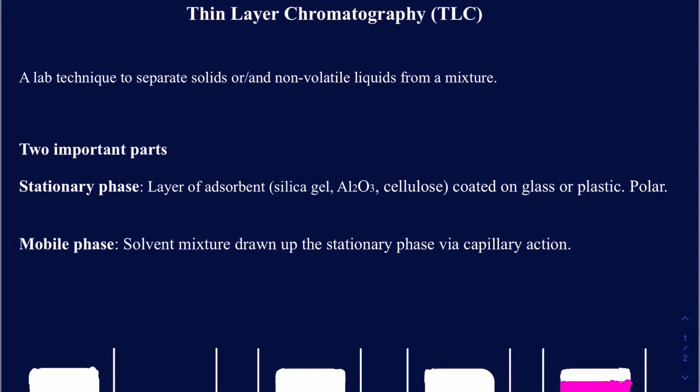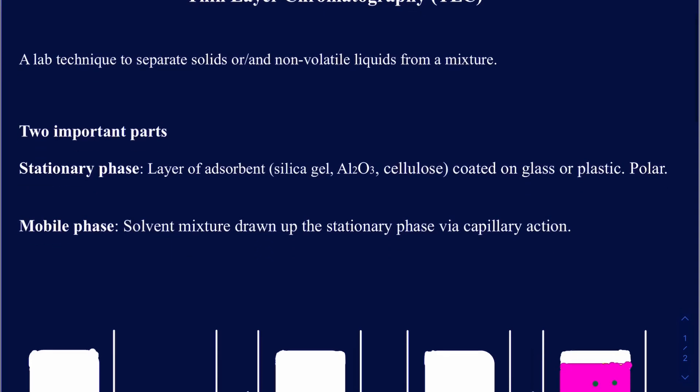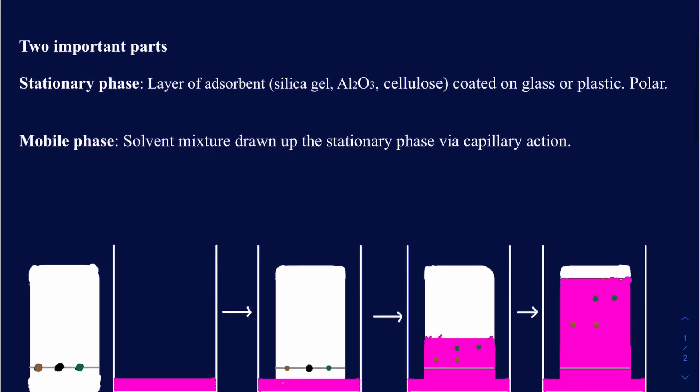TLC actually has two important parts. One of them is called the stationary phase, and the second one is called the mobile phase. Let's focus on the stationary phase first. As the name specifies, stationary means it does not move, and that's exactly what we're going to have here.